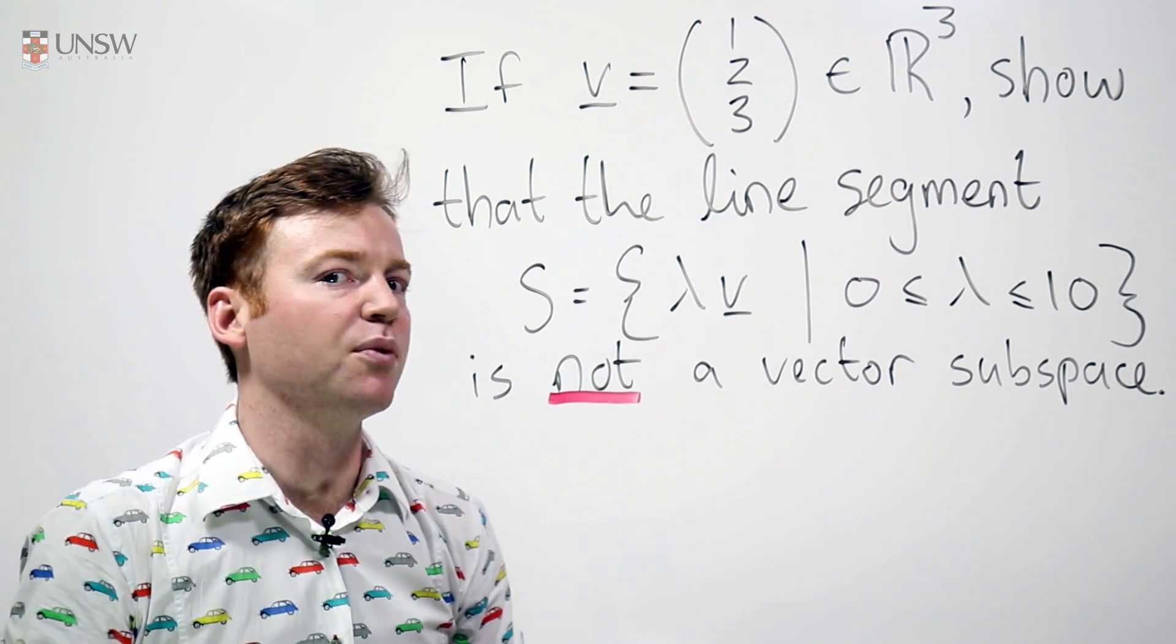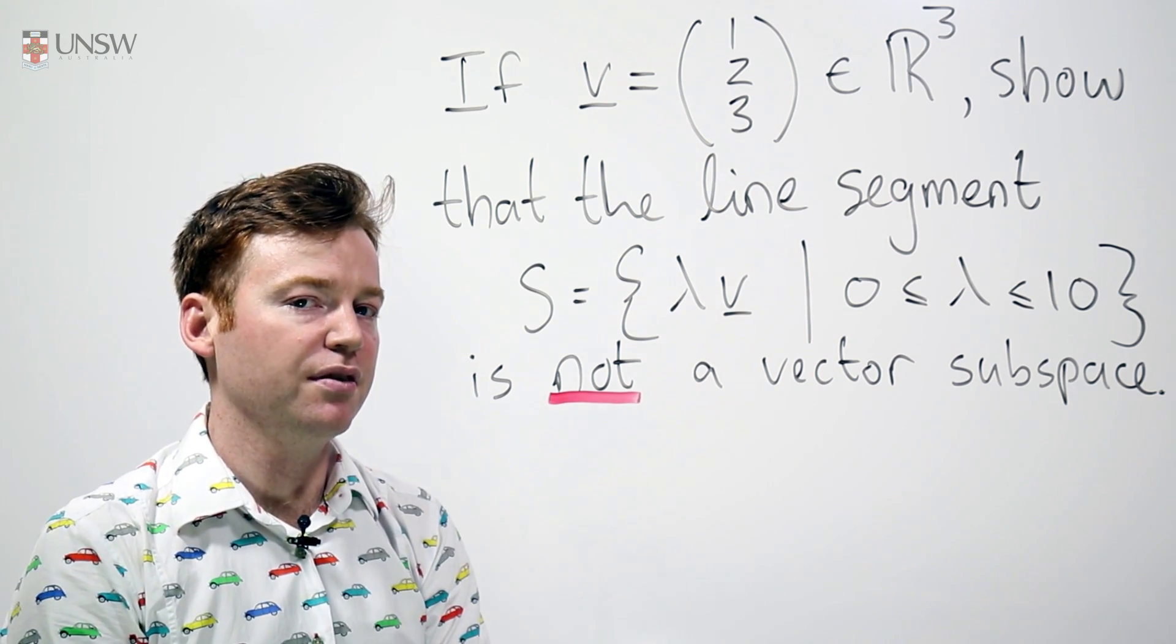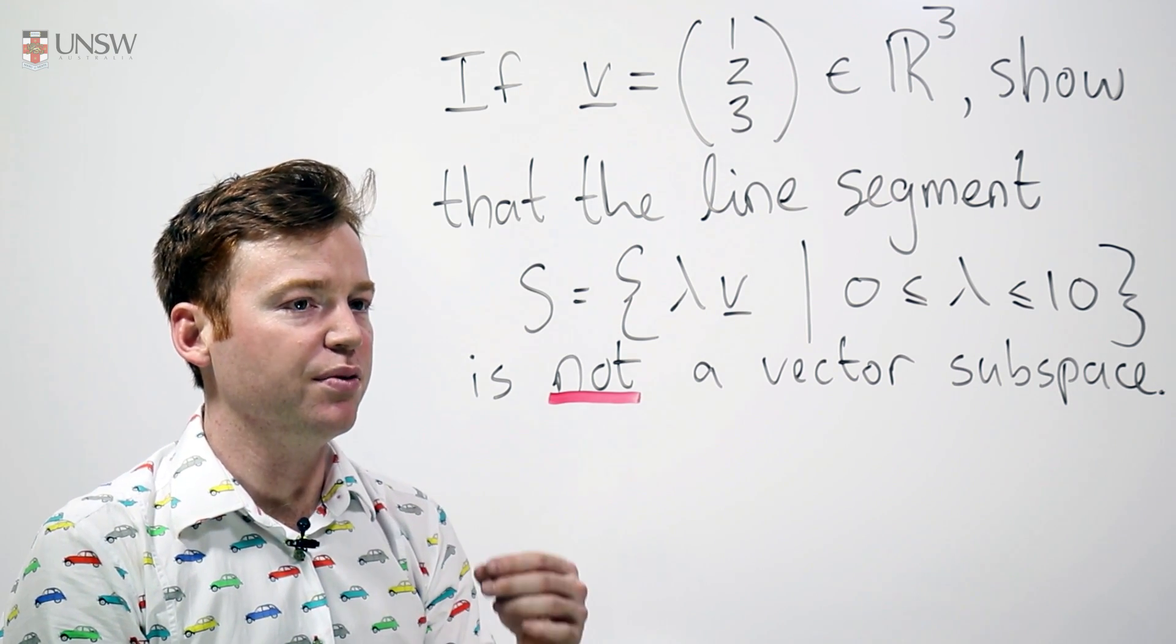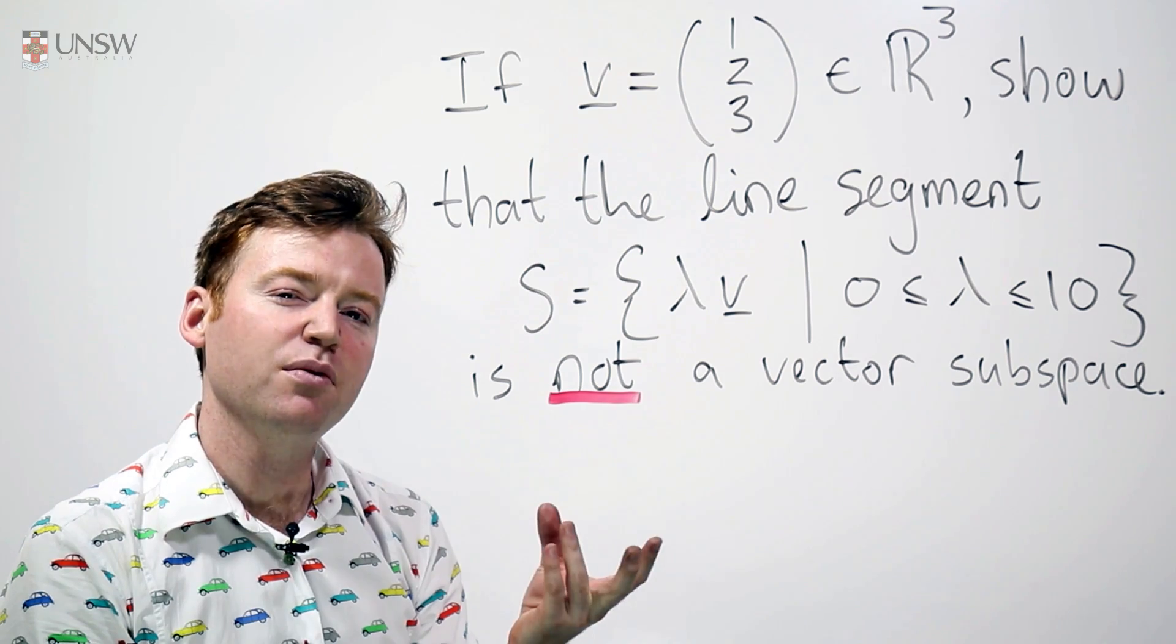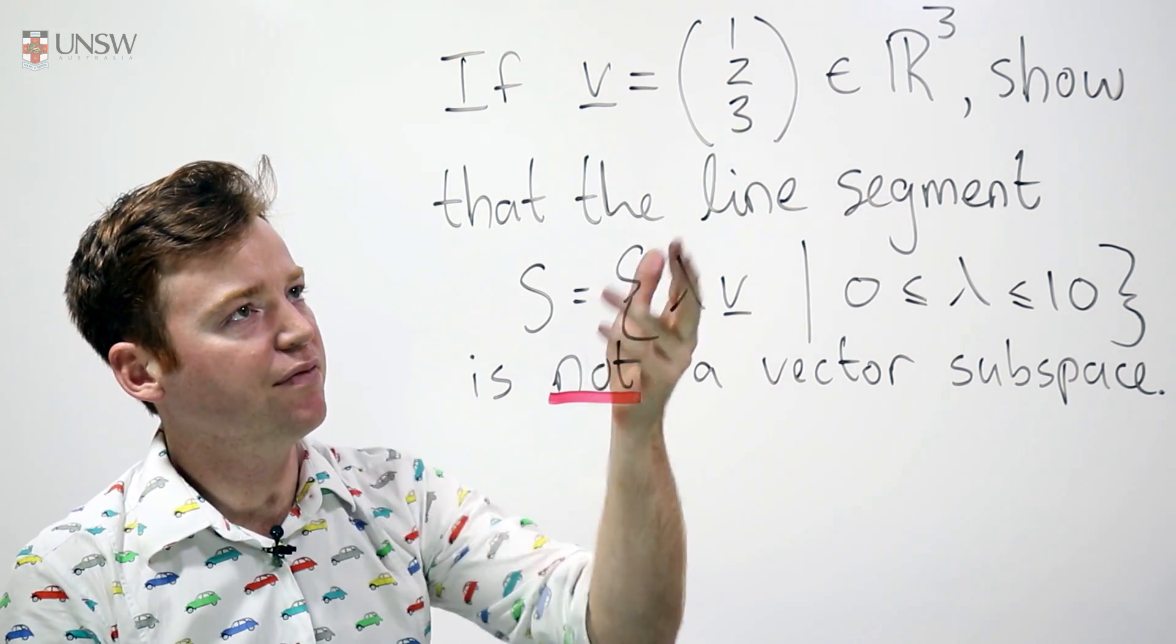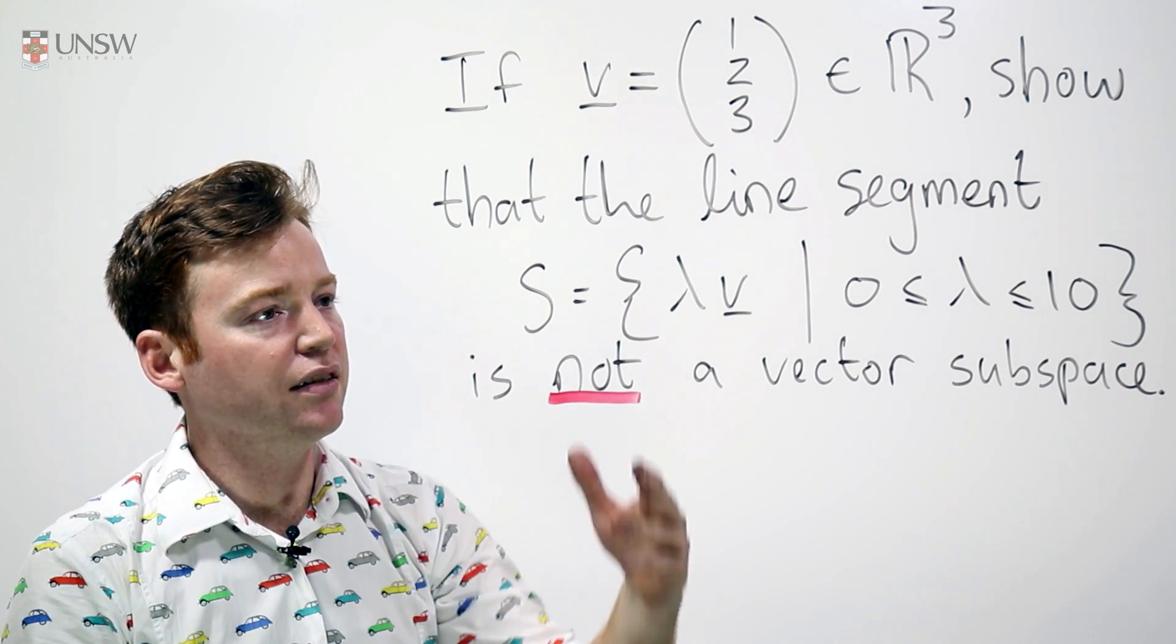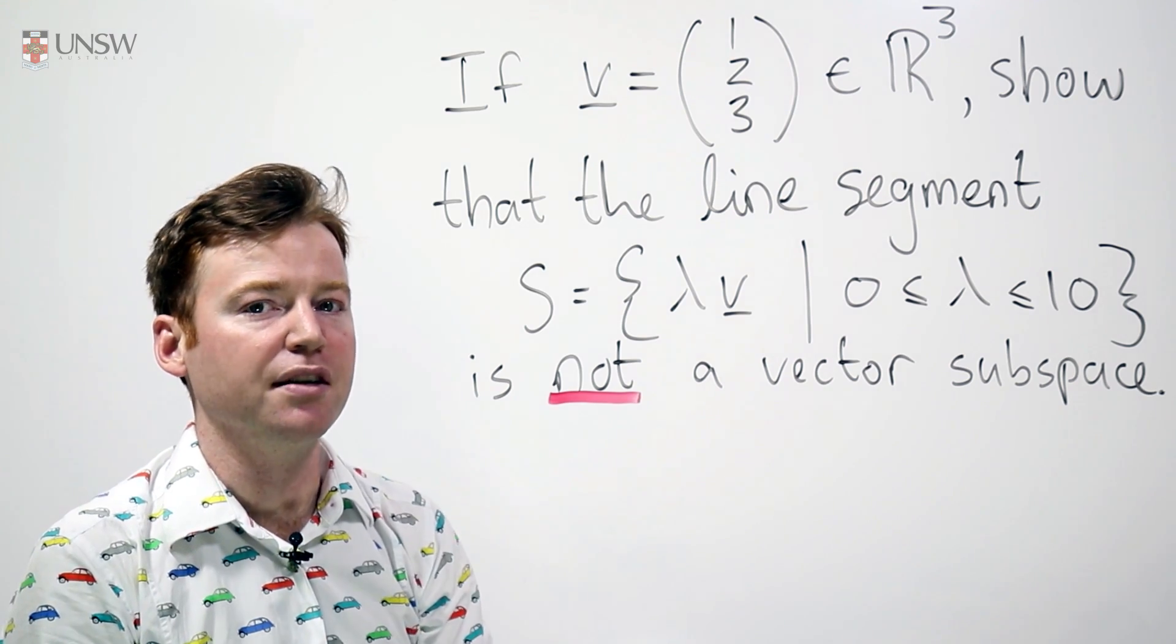There's a very particular way in which I recommend you go about these questions. The first step along the way is to look at the set S and think, what is this object? Well, we can see that the vector V is just 1, 2, 3 from R³ and lambda V,